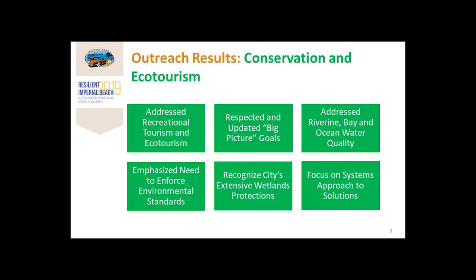Regarding conservation and ecotourism, throughout outreach we learned the importance of balancing environment, economy, and community goals because they are deeply intertwined and mutually dependent on each other for success. The plan needs to support thoughtful expansion of tourism and ecotourism opportunities in a way that respects, yet updates, the city's big-picture goals. We heard loud and clear how important it is to fix water quality problems, including polluted discharges originating from Mexico, and citizens emphasized the need to enforce environmental standards.